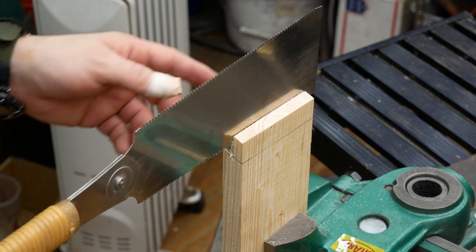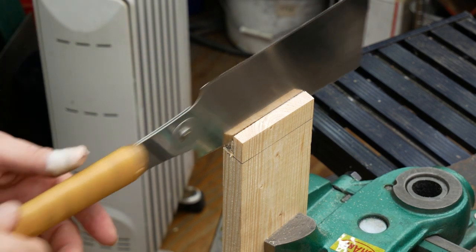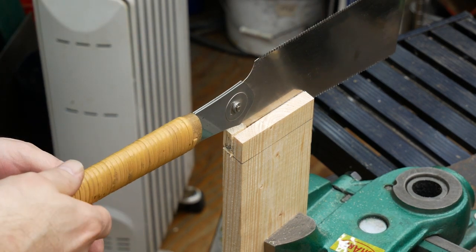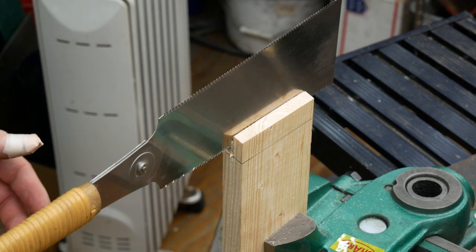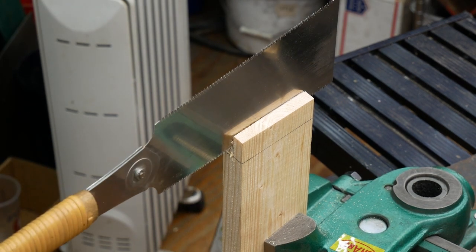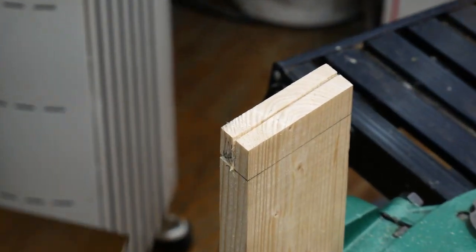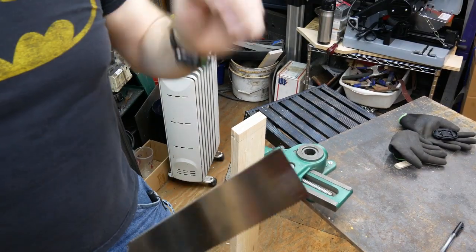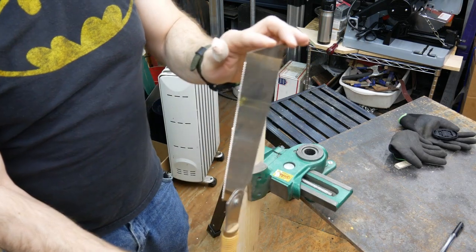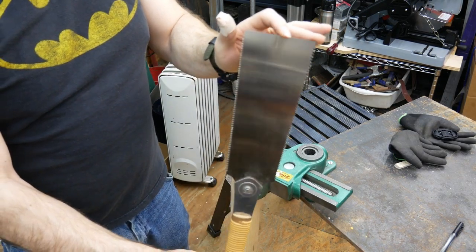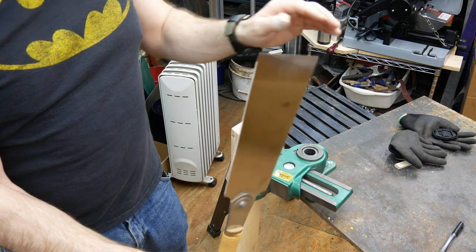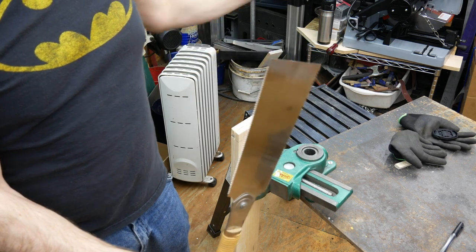I will say on this type of saw you don't want a death grip, you kind of want a pretty light grip. You want the saw to do the work, you're just guiding. Also understand the blade is tapered so you got to be careful not to go too deep on the far side.